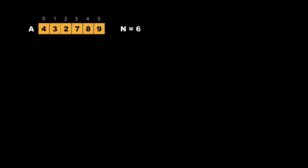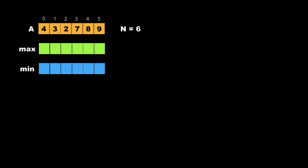Now let's look at the approach to solve this problem. We consider the array of size 6 with elements 4, 3, 2, 7, 8, 9. We create two additional arrays named max and min, and declare a few variables: ele, big, and small. We initialize ele to -1, big to the first element, and small to the last element.